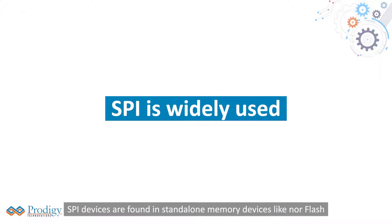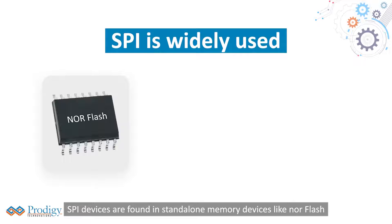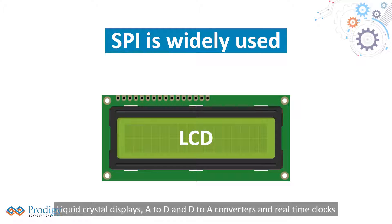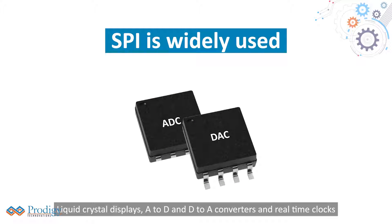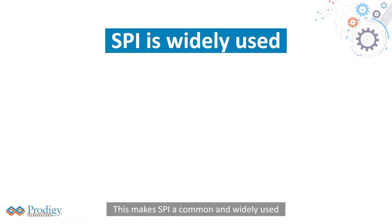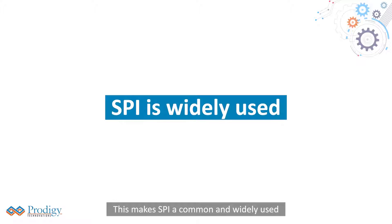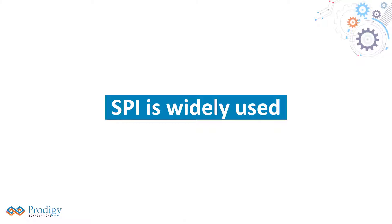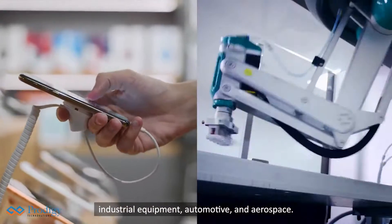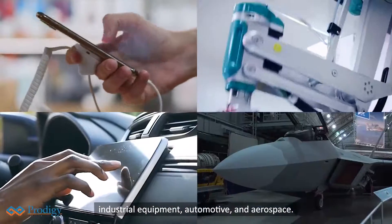SPI devices are found in standalone memory devices like NorFlash, serial EEPROMs, and secure digital memory cards, liquid crystal displays, A-to-D and D-to-A converters, and real-time clocks. This makes SPI a common and widely used serial bus across many applications, including consumer electronics, industrial equipment, automotive, and aerospace.